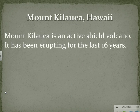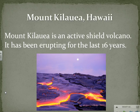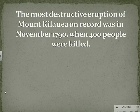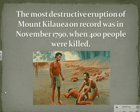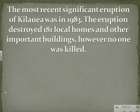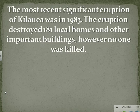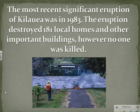Mount Kilauea, Hawaii. Mount Kilauea is an active shield volcano. It has been erupting for the last 16 years. The most destructive eruption of Mount Kilauea on record was in November 1790 when 400 people were killed. The most recent significant eruption of Kilauea was in 1983. The eruption destroyed 181 local homes and other important buildings; however, no one was killed.